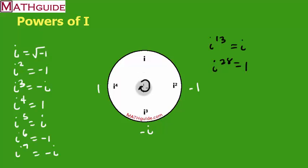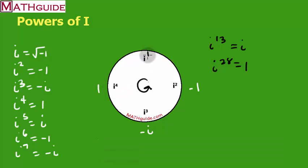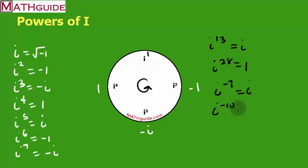For negative powers, we go backwards — counterclockwise — through the wheel. Starting from 1 at i to the fourth position, going backward: i to the zero, negative one, negative two, and so on. For example, i to the negative seventh: counting back from i to the first — zero, negative 1, negative 2, negative 3, negative 4, negative 5, negative 6, negative 7 — lands on i. For i to the negative tenth, counting back ten steps lands on i squared, which is negative 1. The wheel works for both positive and negative powers.